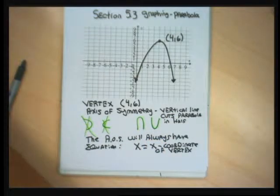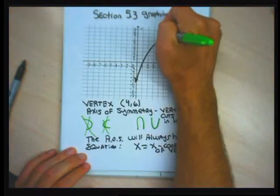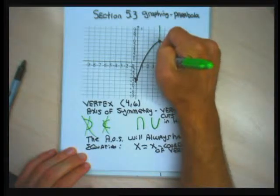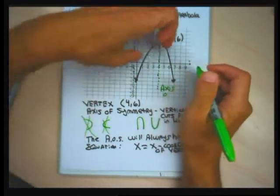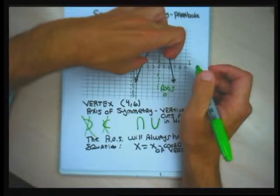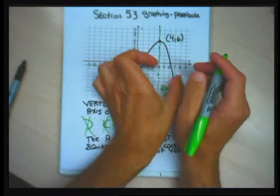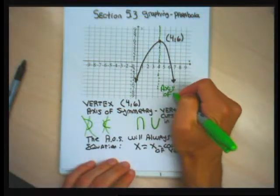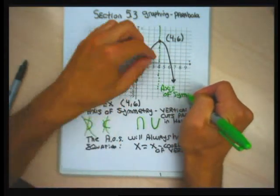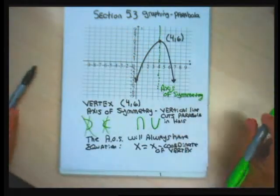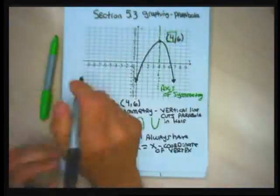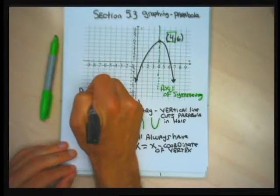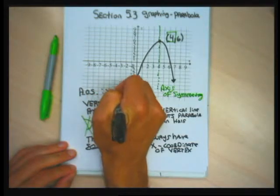The axis of symmetry is a vertical line that cuts the parabola in half. I usually draw it as a dashed line to make it stand out. It's supposed to cut the parabola into two equal halves. The equation of the axis of symmetry has to do with the x-coordinate of the vertex, so for this particular problem the axis of symmetry has equation x equal to 4.